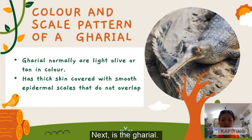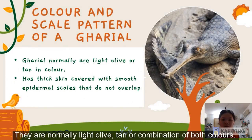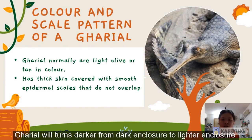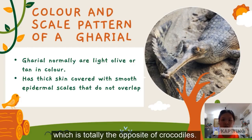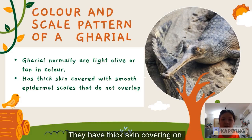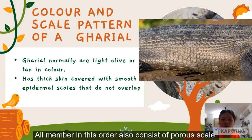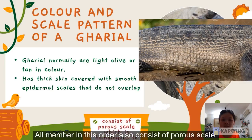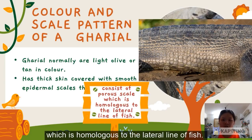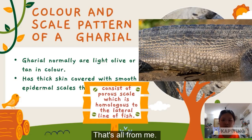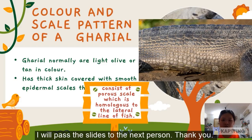Next is the Gharial. They are normally light olive, tan, or a combination of both colours. Gharial will turn darker when moving from a dark enclosure to a lighter enclosure, which is the opposite of crocodiles. They have a thick skin covering on smooth epidermal scales that do not overlap. All members in this order also consist of porous scales, which are homologous to the lateral line of fish. That's all for me, I will pass the slides to the next person. Thank you.